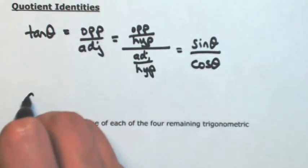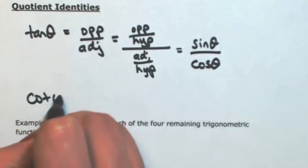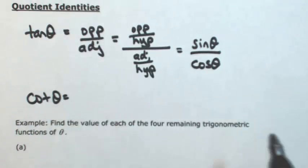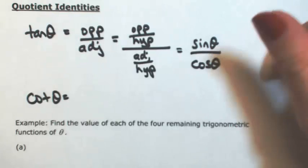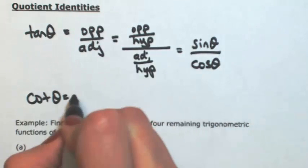We could do the same thing for cotangent of theta, or just understand that cotangent is the reciprocal of tangent — so just flip that over.